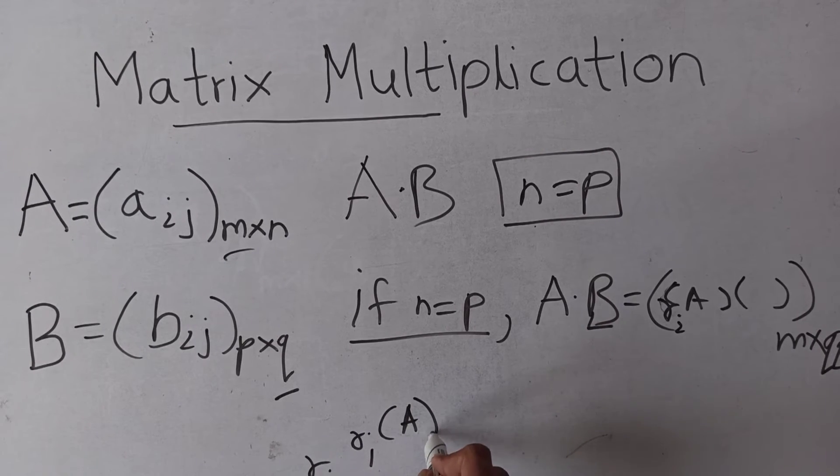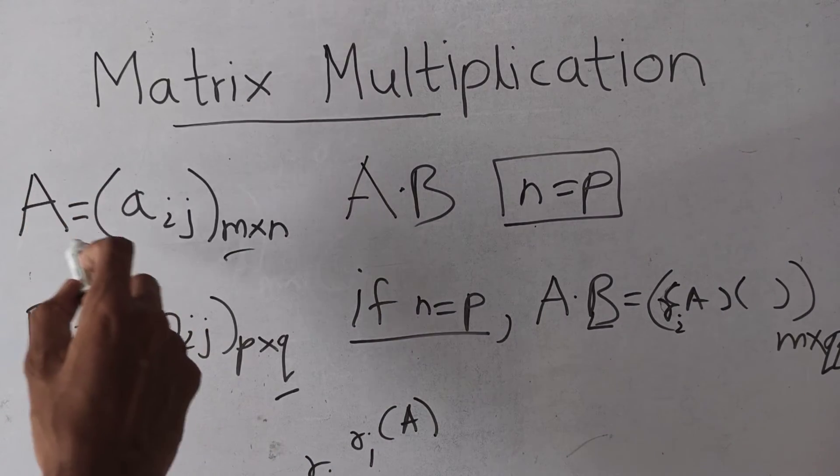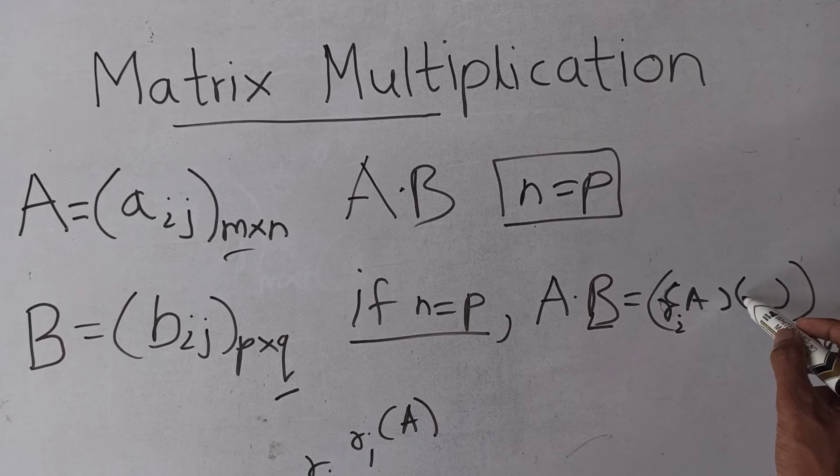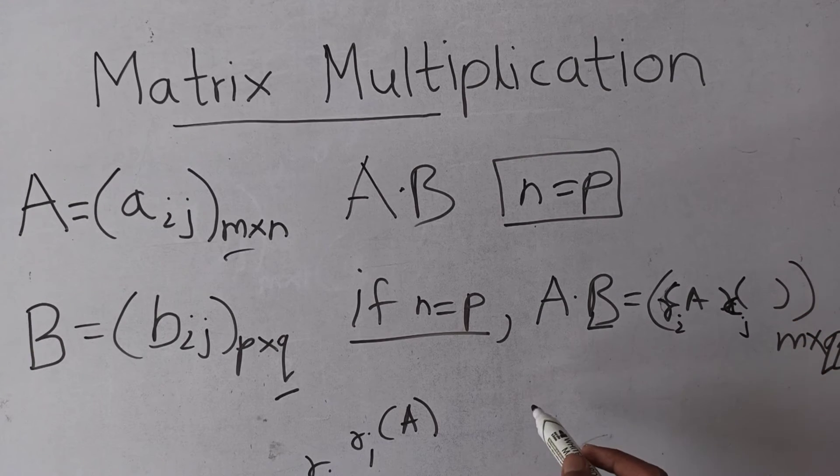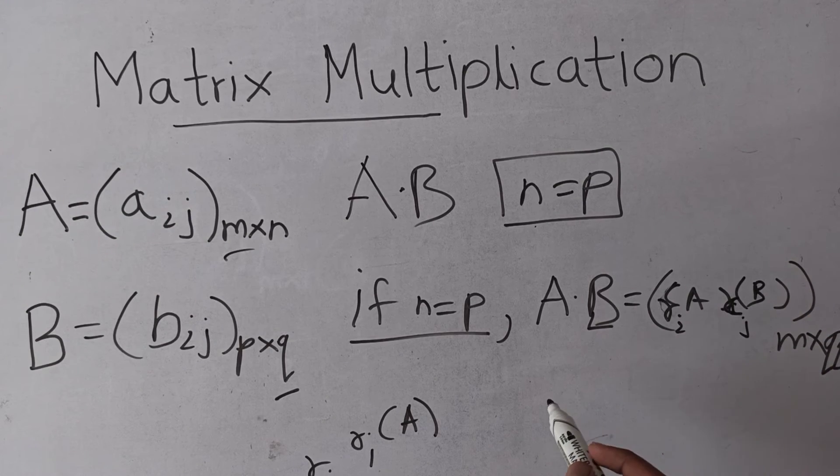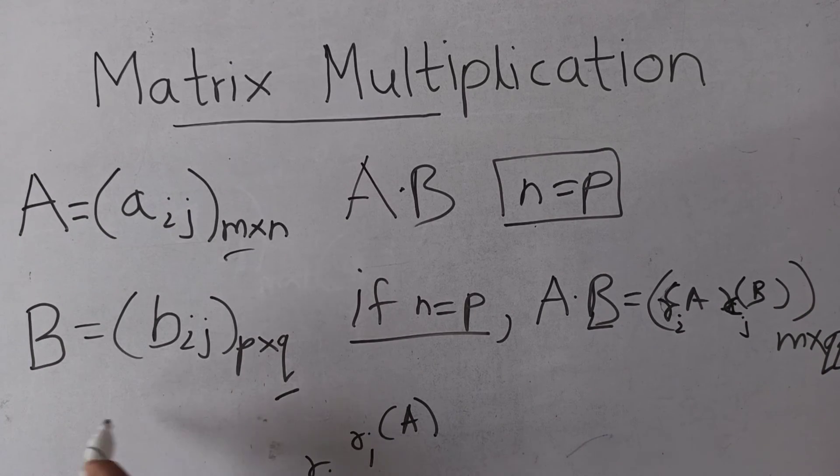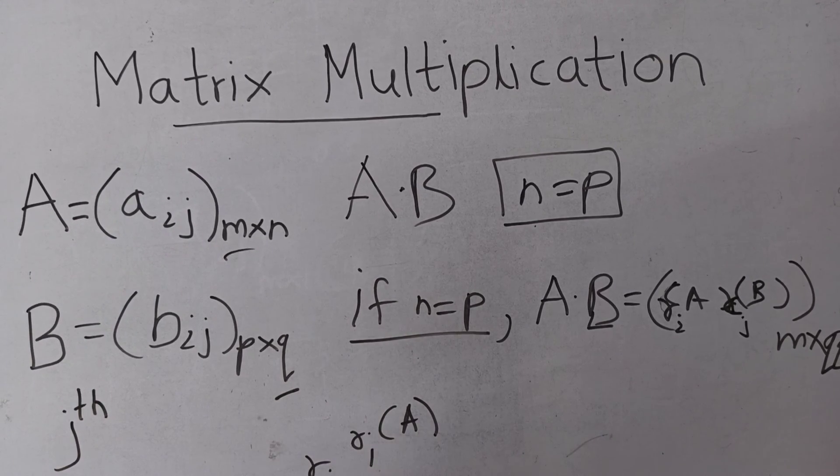And we have c_j^B, means a column matrix of B, which is the jth column matrix.